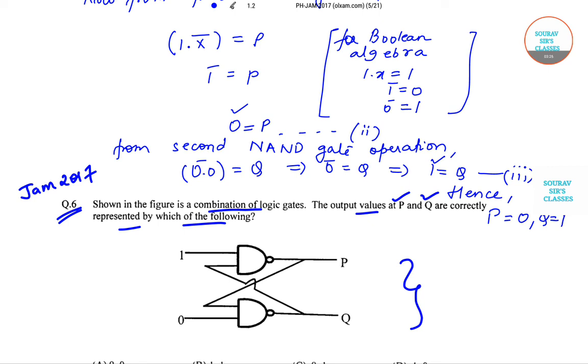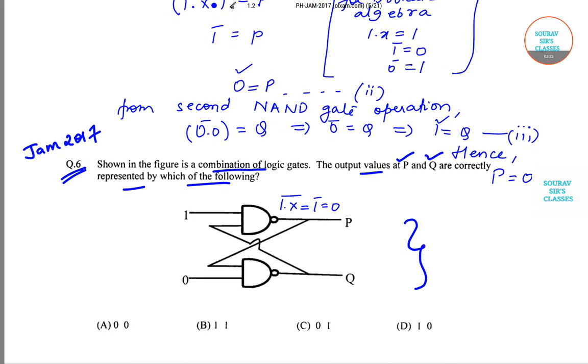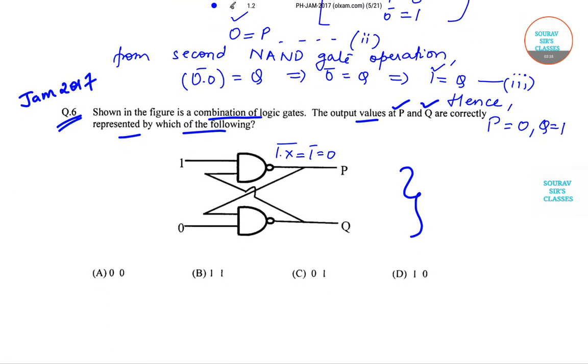So diagrammatically I'll write here 1·x = 1 = 0. So the correct answer is P = 0 and Q = 1. So option number C is the correct answer to this particular question.